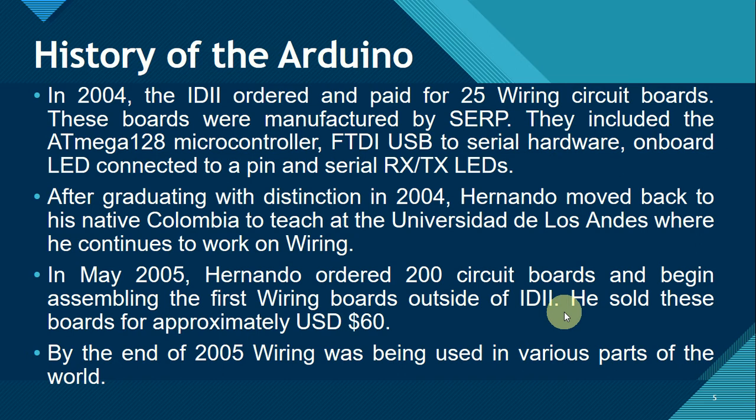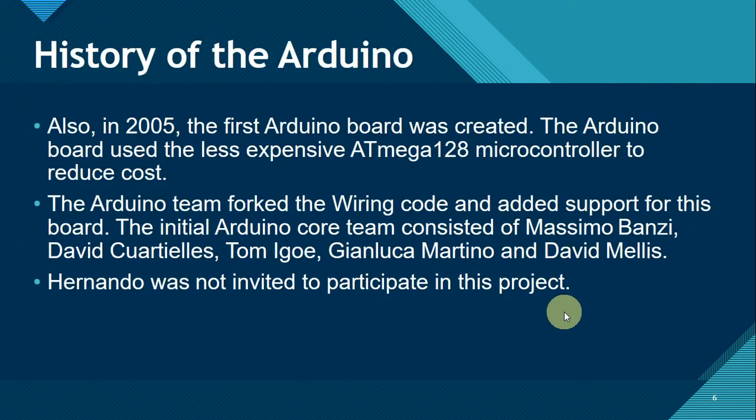In May 2005, Hernando ordered 200 circuit boards and began assembling the first wiring boards outside of IDII. He sold these boards for approximately US$60. By the end of 2005, Wiring was being used in various parts of the world. It was very popular because microcontrollers at that time were very expensive, and for only US$60 you could already have a microcontroller for your projects. Also in 2005, the first Arduino board was created.